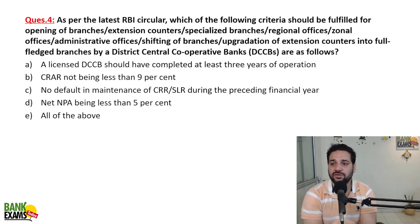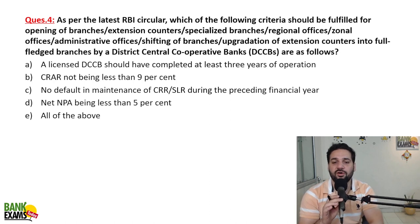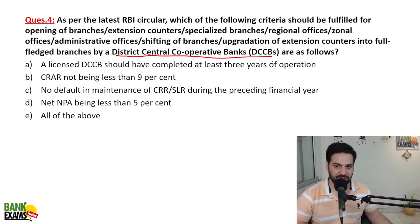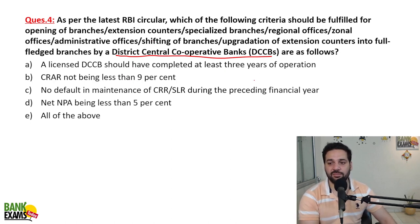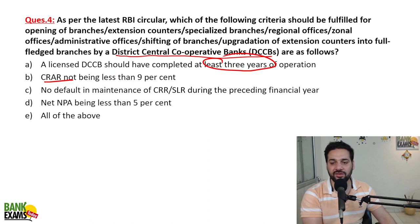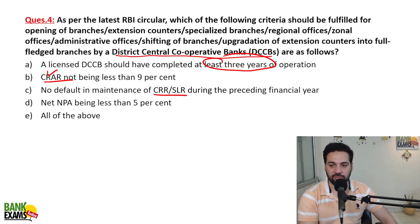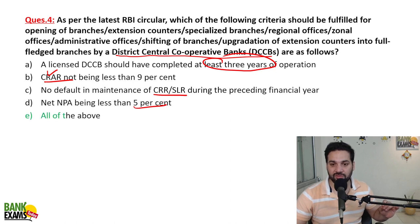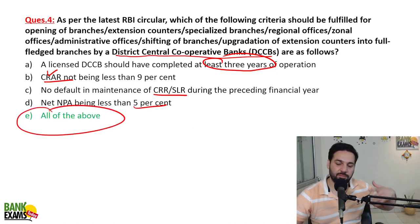As per the latest RBI circular, which criteria should be fulfilled for opening of branches, new places of business, or specialized branches? For a District Central Cooperative Bank to open any new branch or place of business, or shift a branch, they should have completed at least three years of operation. CRR should be at least 9%, with no default in CRR, SLR, or CRAR requirements set by RBI. Net NPA should be less than 5%.